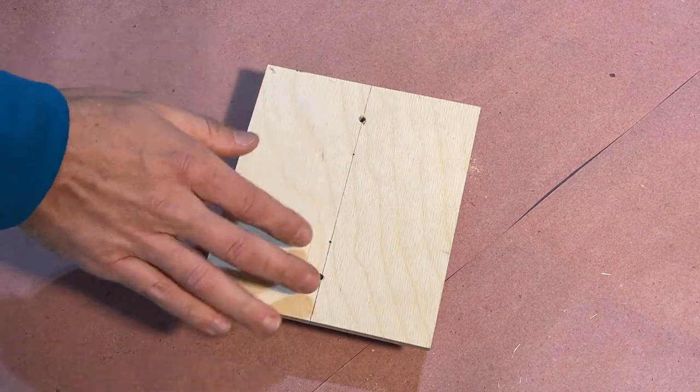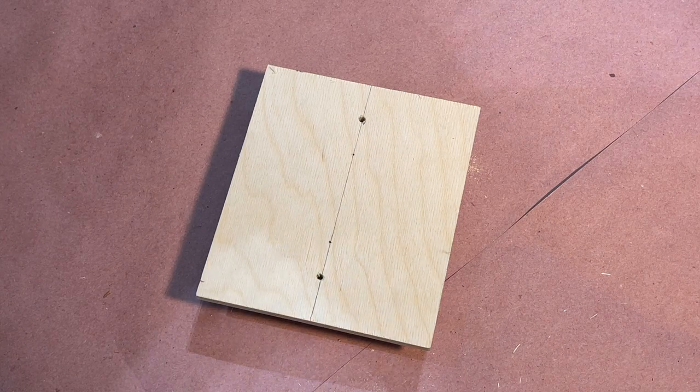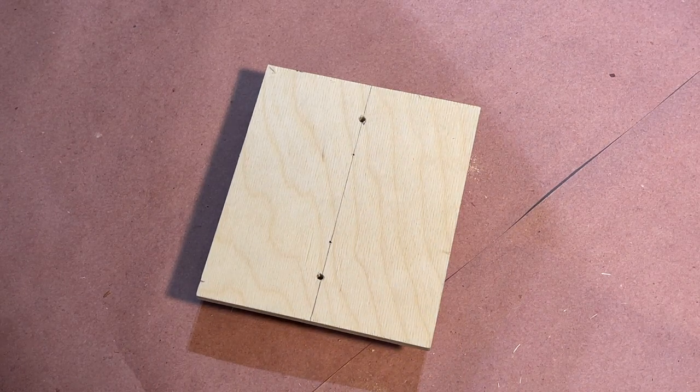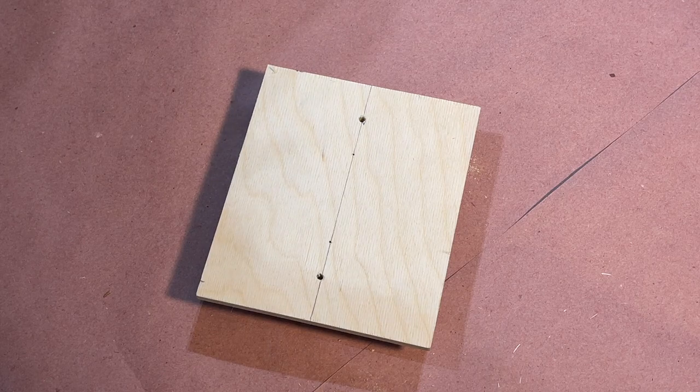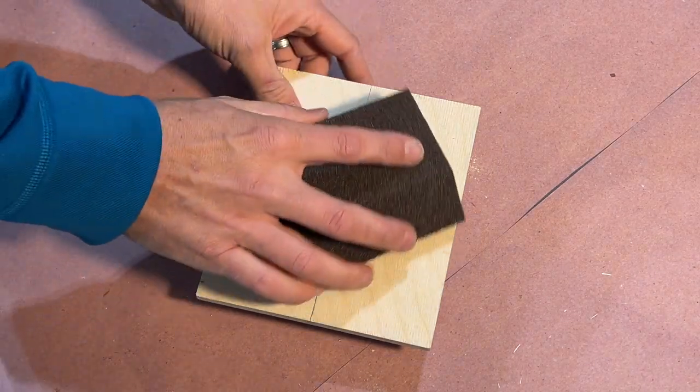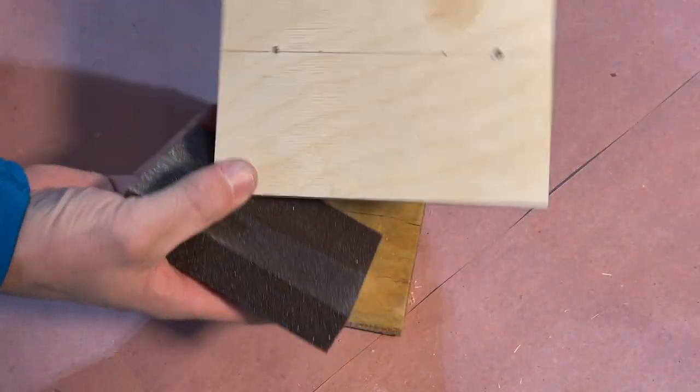So now I'm ready to start prepping the surface and then putting some paint, which I'm just going to use some spray paint on this base plate. First I'm just going to do some light sanding.